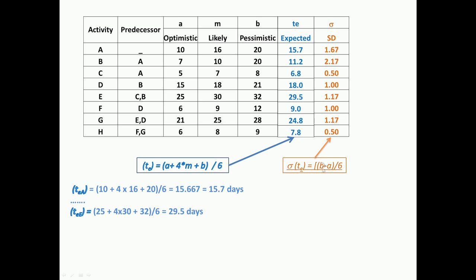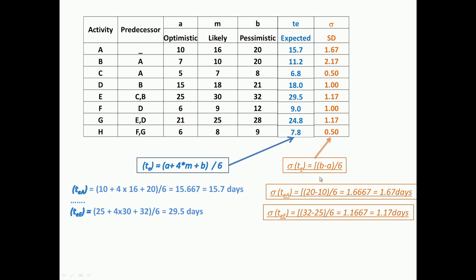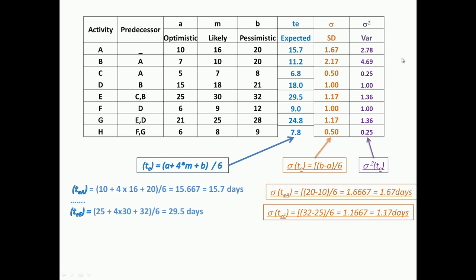We then move on to calculating the standard deviation for the activities. Applying this formula, for activity A we have B minus A, which is 20 minus 10, divided by 6. This gives the rounded-off value of the standard deviation of the activities. From the standard deviation, we square it to get the variance values for each activity. So we have taken the basic input data, converted it to expected duration, standard deviation, and finally the variance of the activities.